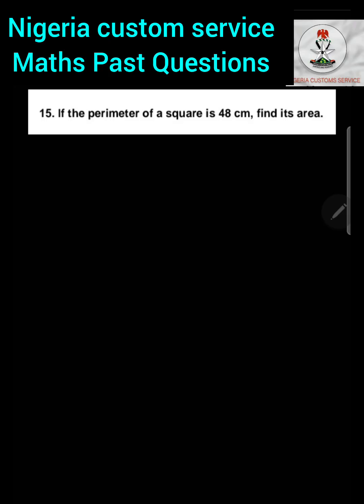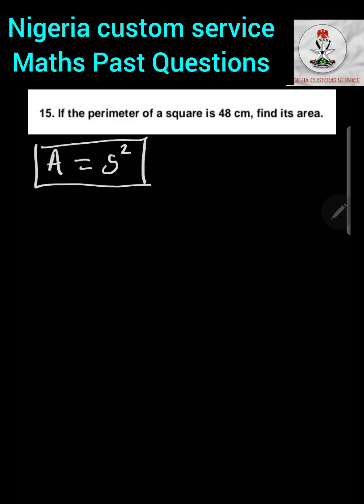Question 15: The perimeter of a square is 48 centimetres; find its area. The area of a square equals side squared. To find the side, recall that the perimeter of a square equals 4 multiplied by the side. Since all sides of a square are equal, we multiply one side by 4.